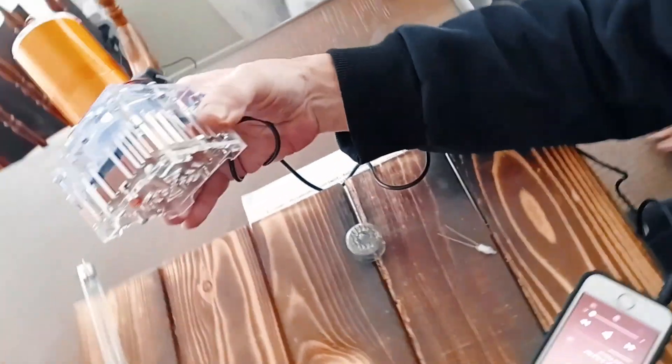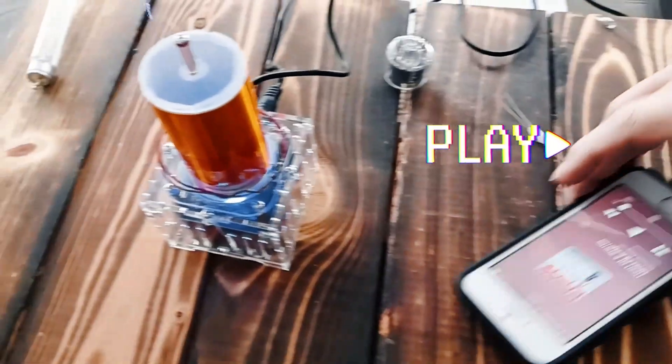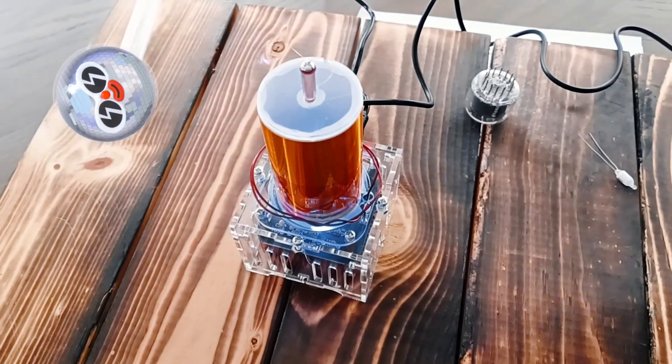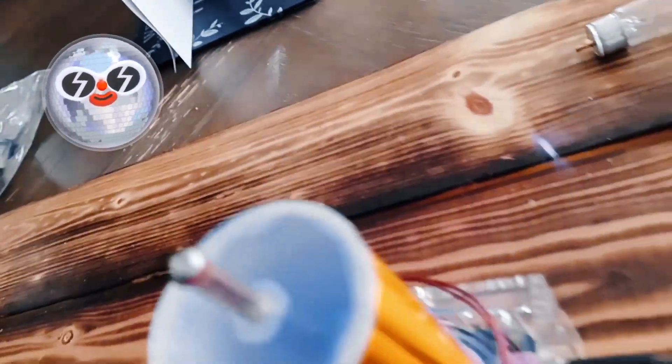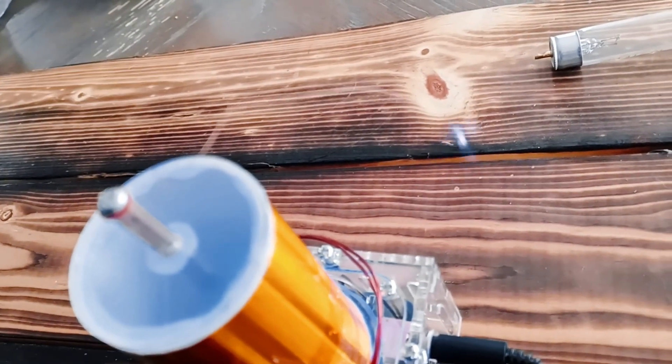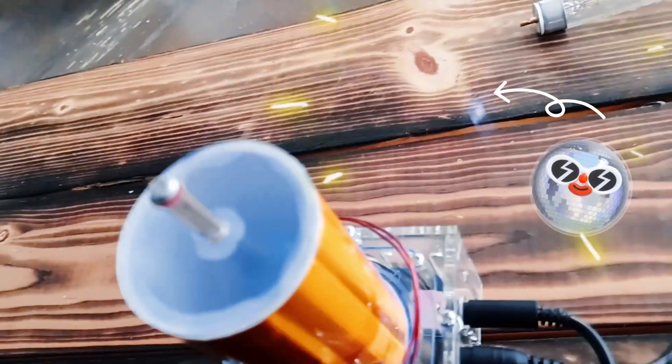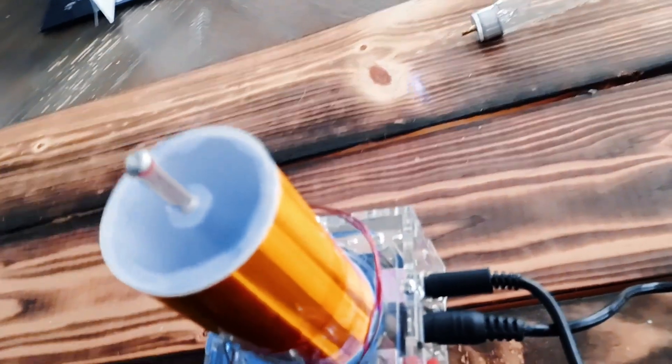As you guys can see, there's no speakers, there's nothing here. As soon as I turn the music on to play, it's playing at the tip, right there. The sound is coming out right there through the vibrations and the frequency being sent through the Tesla coil.